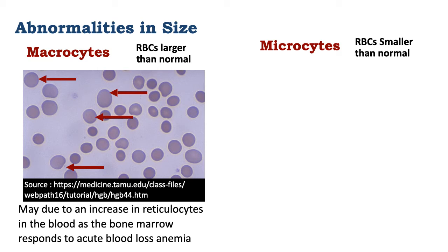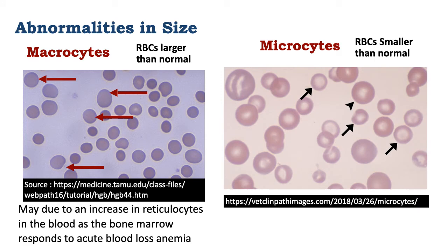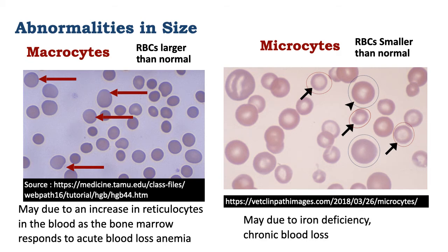This is a response to acute blood loss anemia. This slide picture shows microcytes — smaller red blood cells indicated by the full arrows, and circled in red. The smaller red blood cells can be compared to the normal ones circled in blue or shown by the arrowhead. The smaller microcytes are also pale, while the normal red blood cells remain normochromic. The microcytes in this case could be due to iron deficiency or chronic blood loss.